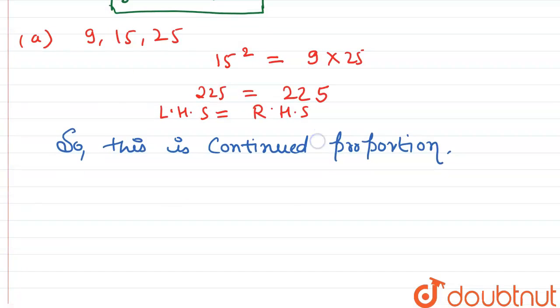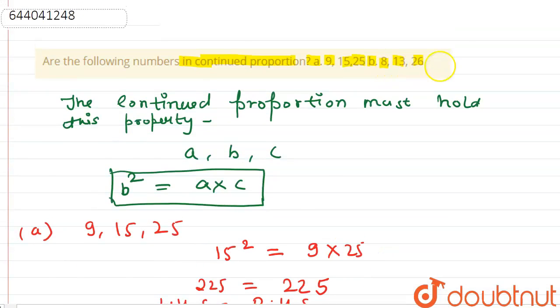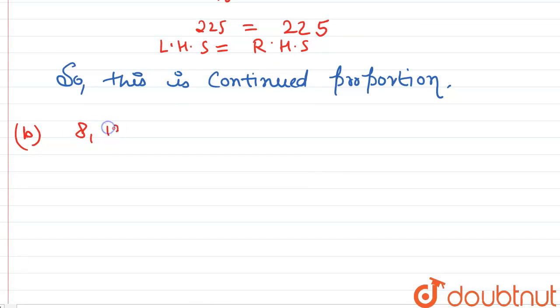Now, let's check (b) also like this. Here, (b), the numbers are 8, 13, 26. Now, the middle term is 13, so square of 13 equals the extreme terms 8 and 26, so the product of 8 and 26. 13² we get 169 equals 8×26, which is 208.